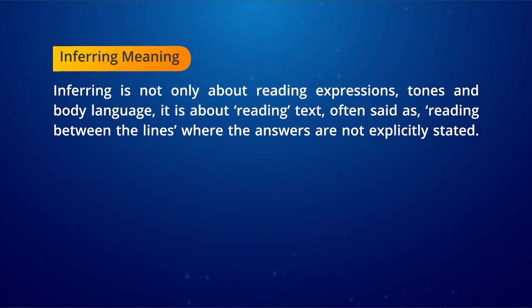Now the fourth aspect: we have covered skimming, scanning, and contextual clues. Next is inferring meaning from a text. We make inferences all the time — if someone smiles, we infer they are happy; if someone looks grim, we infer they are angry. A text conveys mood and meaning in a similar way. Inferring meaning is not based on words alone — it is about the import and effect of what the text conveys.